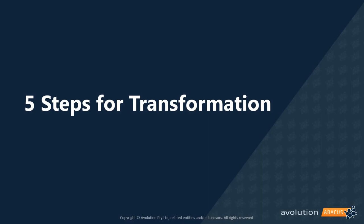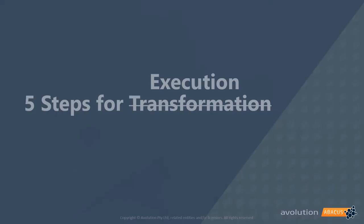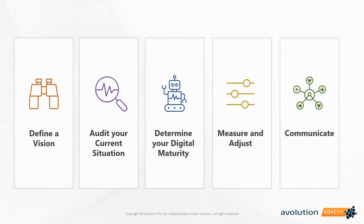Now let's talk about five steps for transformation — actually, five steps for execution — because we don't want to just talk about what transformation looks like in nebulous terminology. We want to talk about five action-oriented steps to execute these strategies. The five steps are: define a vision, audit your current situation, determine your digital maturity, measure and adjust, then communicate.